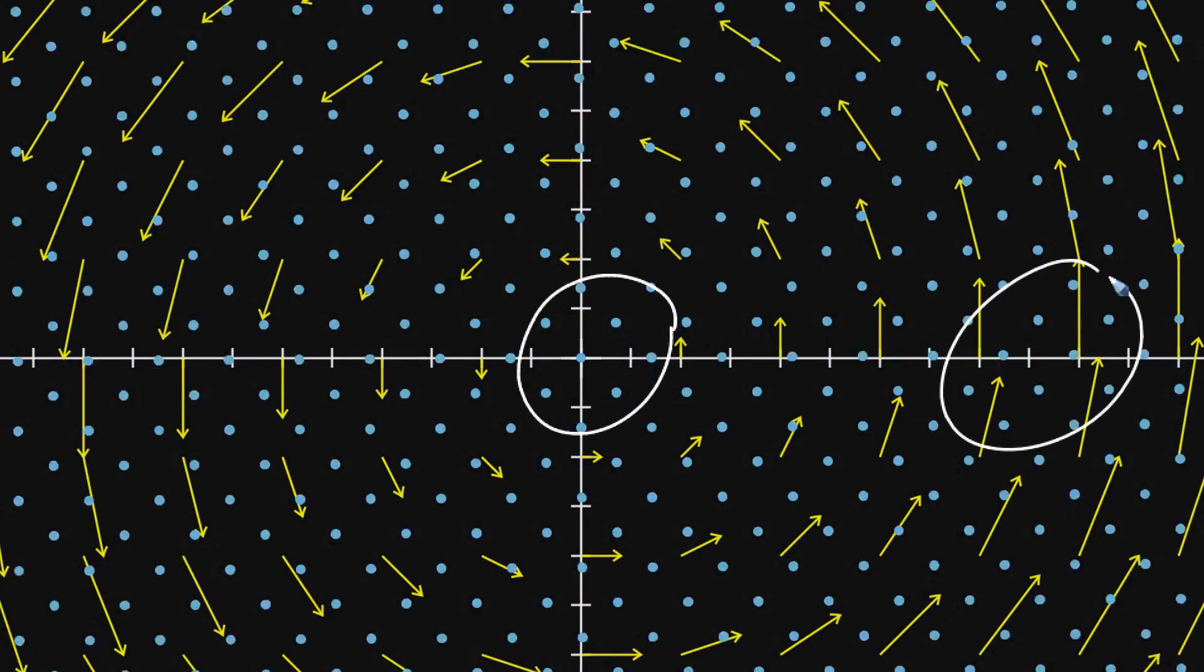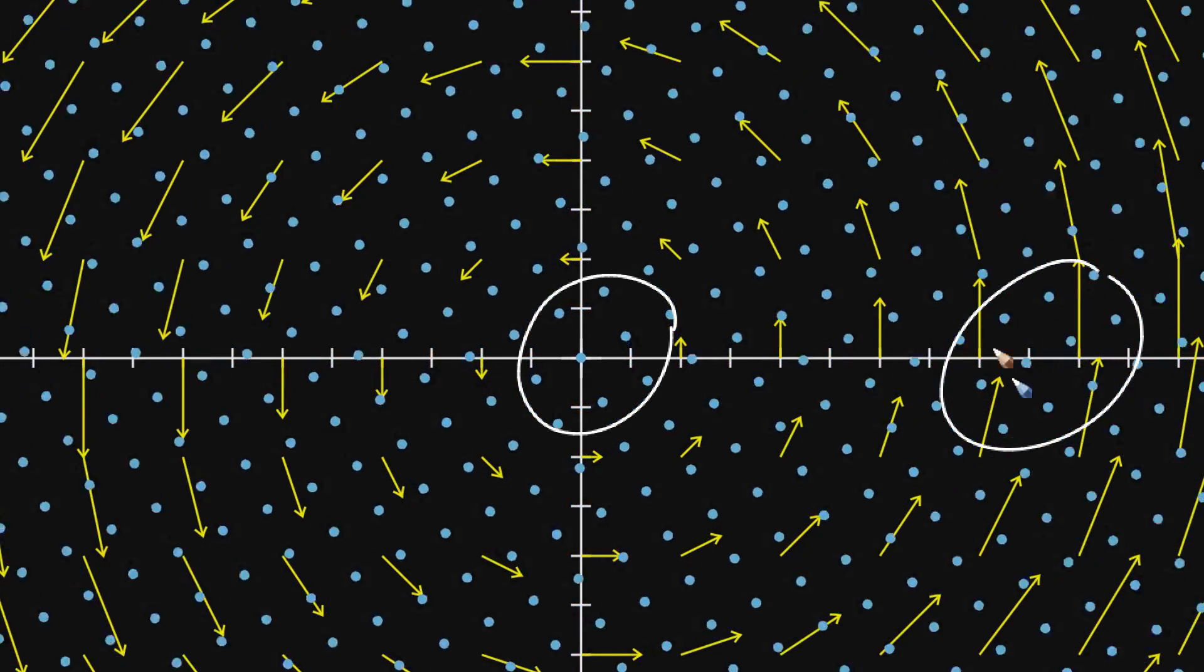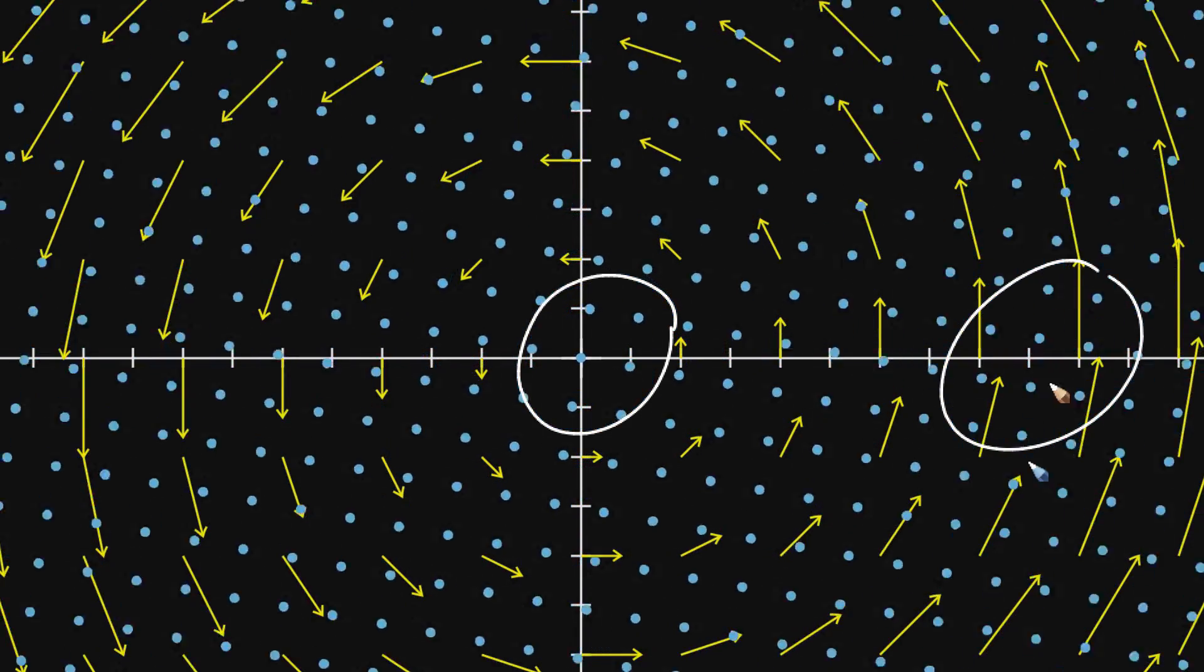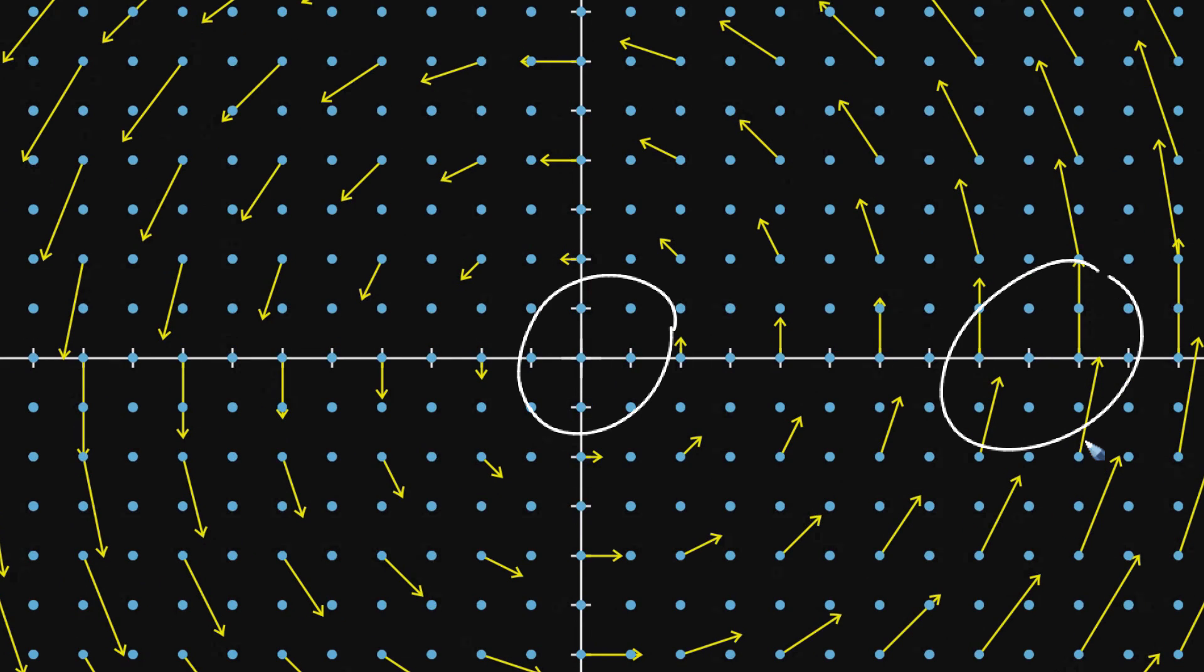But contrast that with what goes on over here on the right. This doesn't look like rotation in that sense at all. Instead the fluid particles are just kind of rushing up through it. But in fact, the curl in this region is going to be just as strong as it is over here, and I'll show that with the formula and computing it through in just a moment.